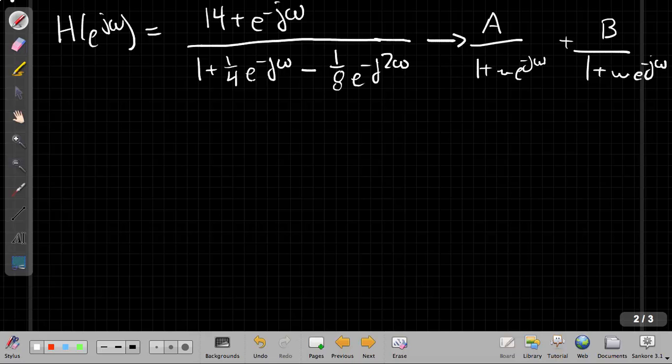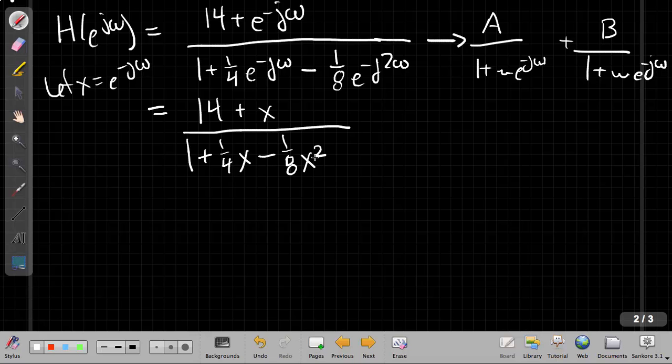Now, when some people first start doing these problems, if you're not quite up to speed with algebra, it might freak you out a little bit to treat e^(-jω) like just a variable. And you don't need to do that. If that makes you uncomfortable, it's perfectly fine to say, let x equal e^(-jω). And then it turns out the thing I'm trying to factor and work with, I can write as (14 + x) over (1 + ¼x - ⅛x²).